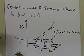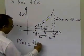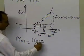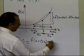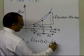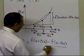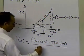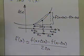So your f'(x) is approximately equal to the rise, which is f(x + Δx) minus f(x − Δx), divided by 2 times Δx. That's how we get f'(x).